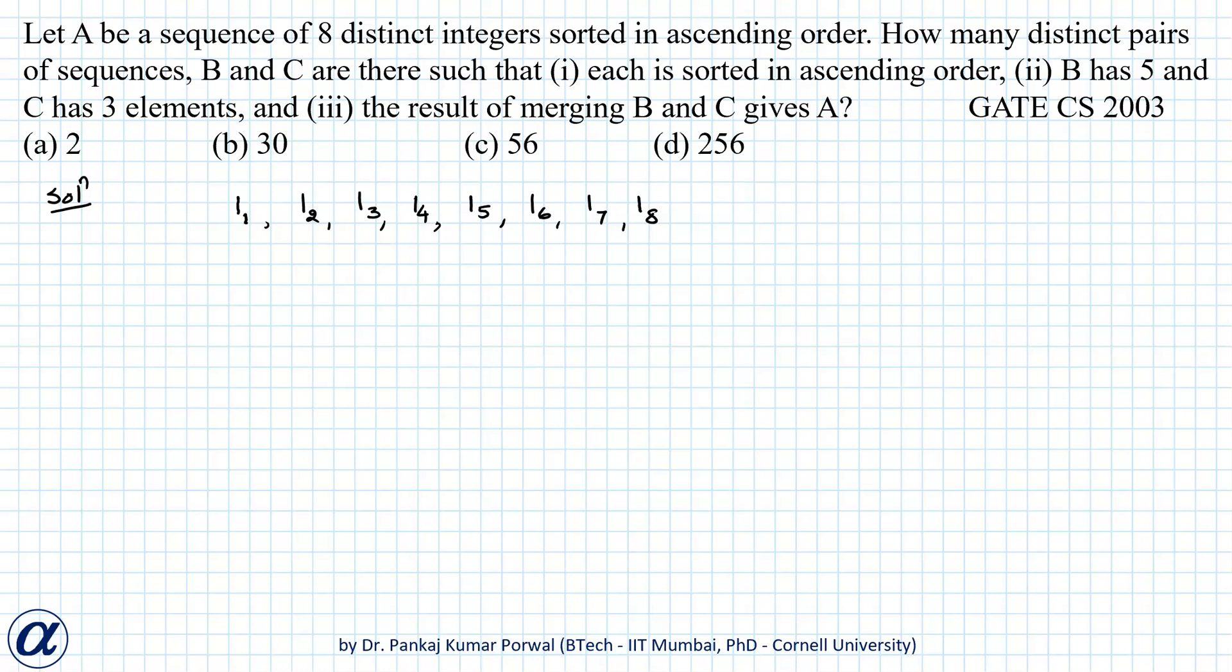In this question, we are given a sequence capital A of eight distinct integers which are sorted in ascending order. So let's say that I1, I2 up to I8 are the eight distinct integers in ascending order.